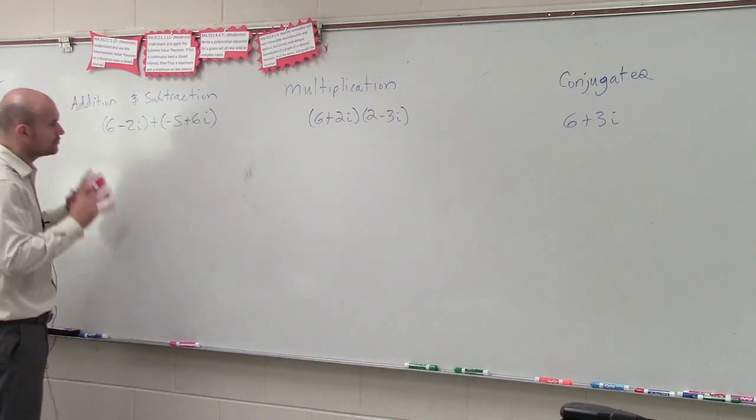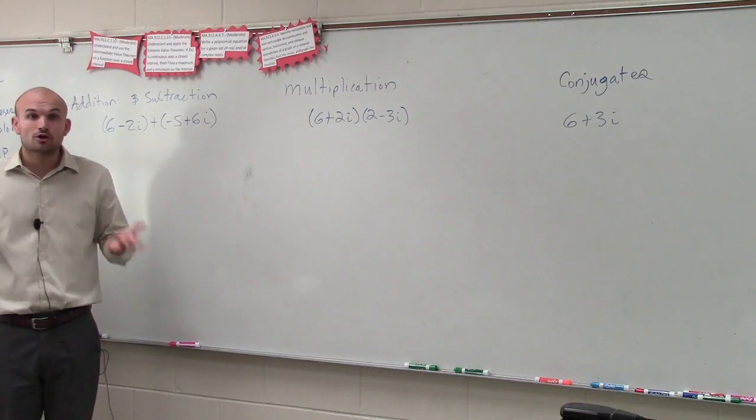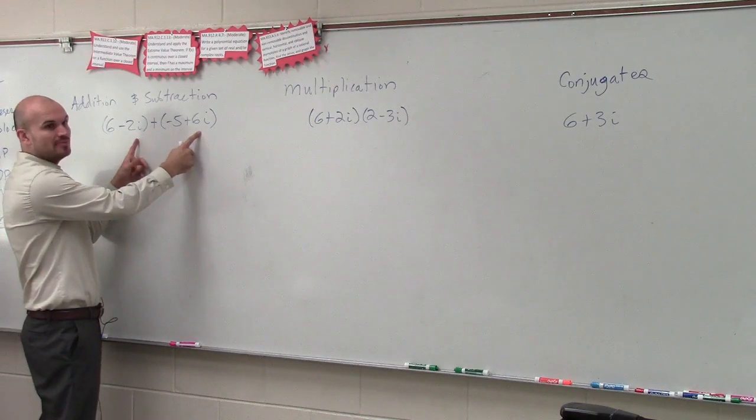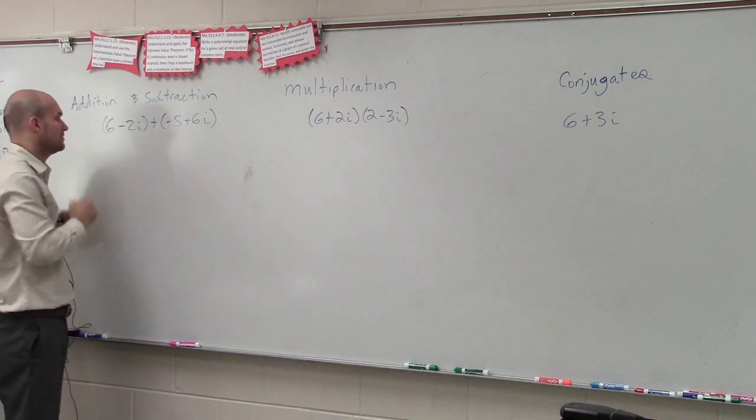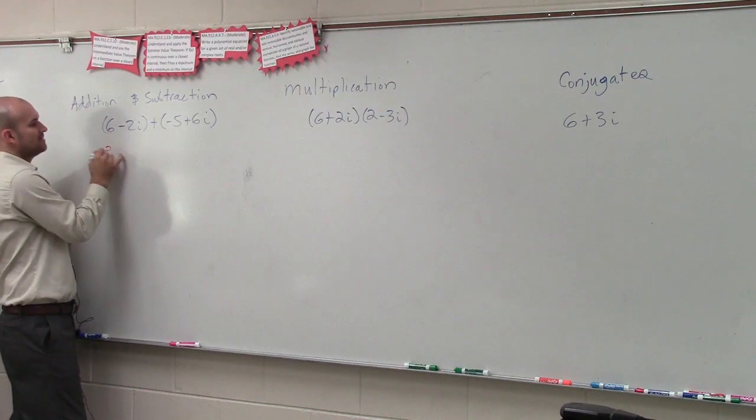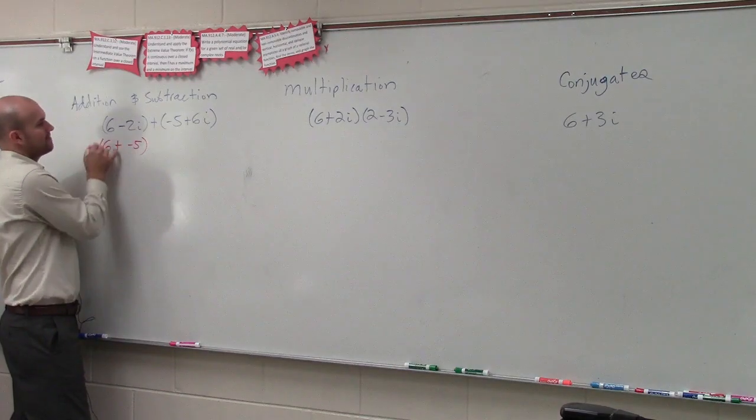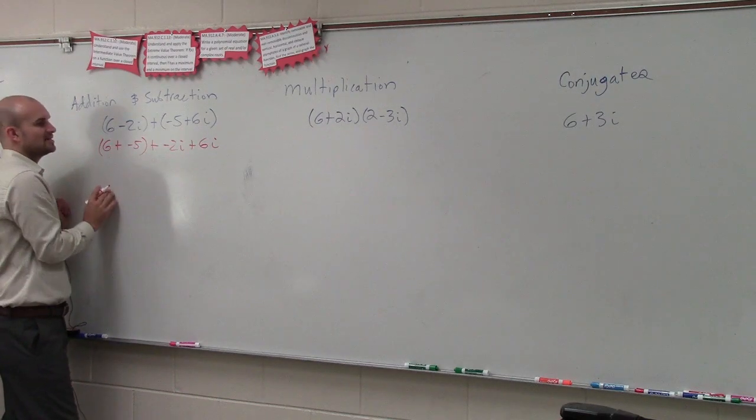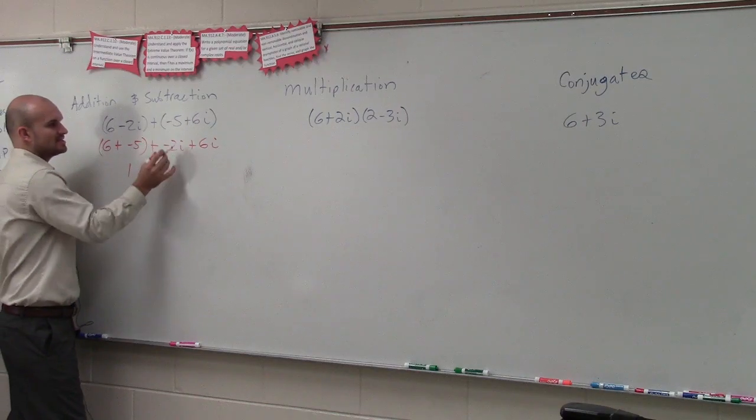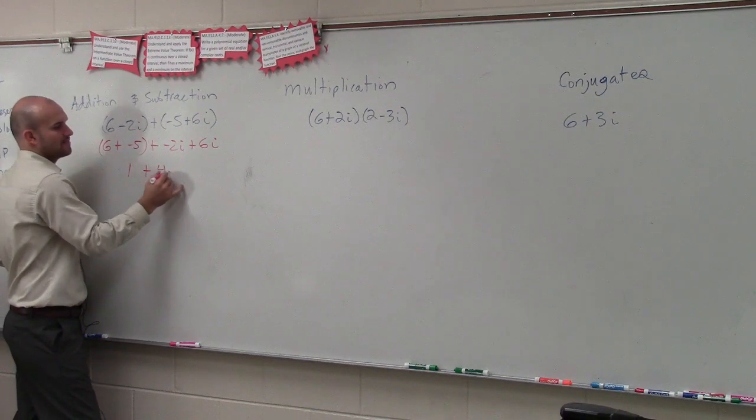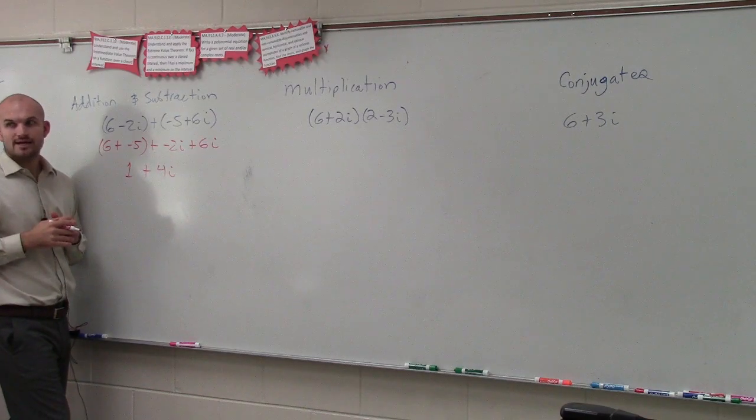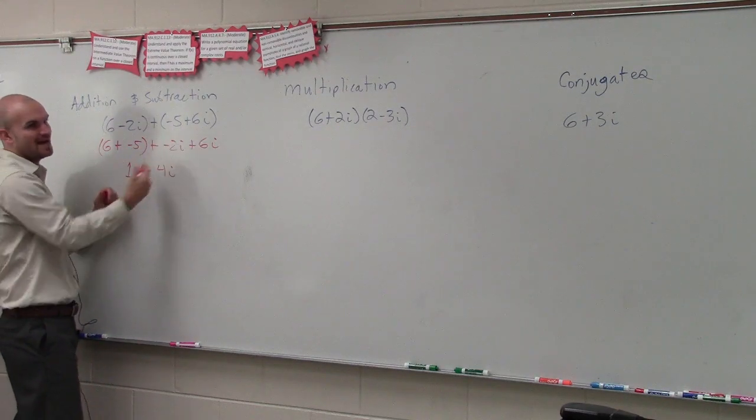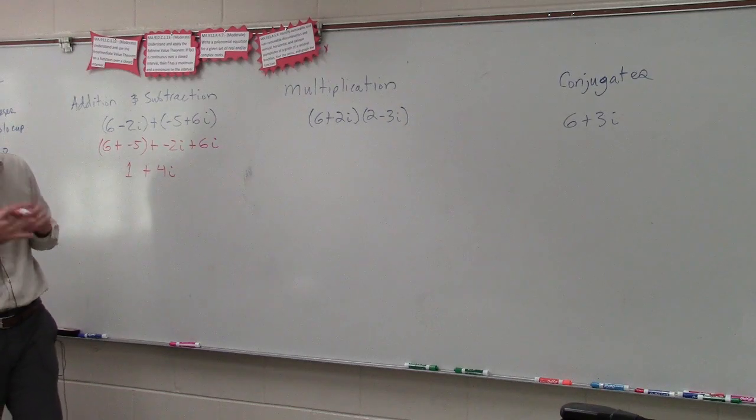When going with the operations of complex numbers, you can see we have this little i here. So without going into the understanding of what i is, when we're doing our operations, for the first part I want you just to treat the operations like they're a variable. So for addition and subtraction, the rule is you can only combine like terms. That means I can only add my numbers, and I can only add my other numbers that are attached with my i, which we'll say treat like a variable. So I'm just going to do 6 plus negative 5 plus negative 2i plus 6i. So 6 plus negative 5 is going to be 1, plus negative 2i plus 6i is 4i.